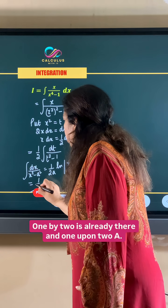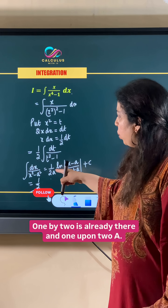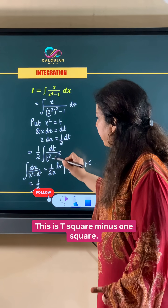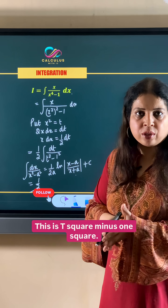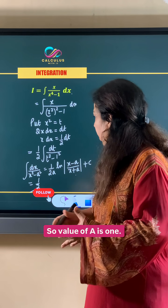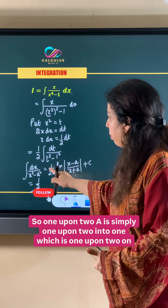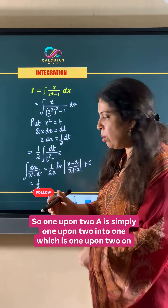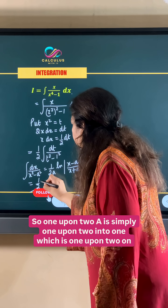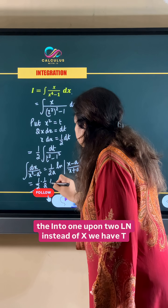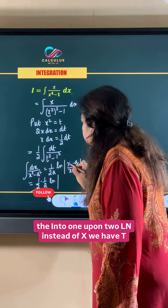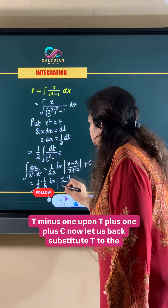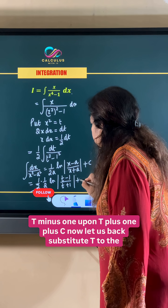We already have 1 by 2 outside, and applying 1 upon 2a: since we have t square minus 1 squared, the value of a is 1. So 1 upon 2a is simply 1 upon 2 into 1, which is 1 upon 2, multiplied by 1 upon 2 ln of t minus 1 upon t plus 1, plus c.